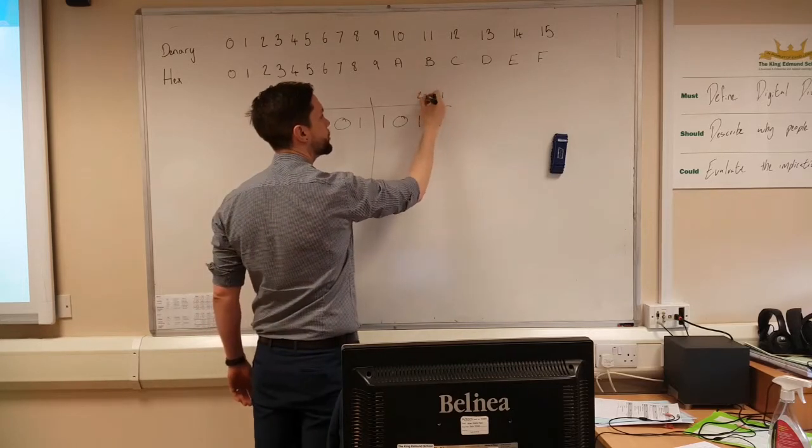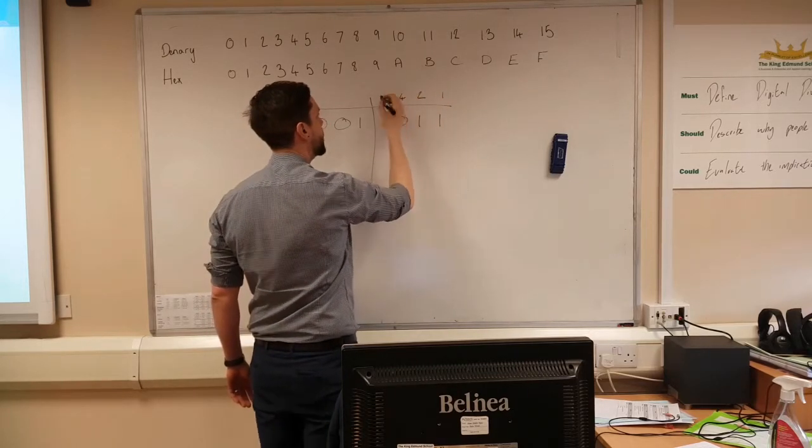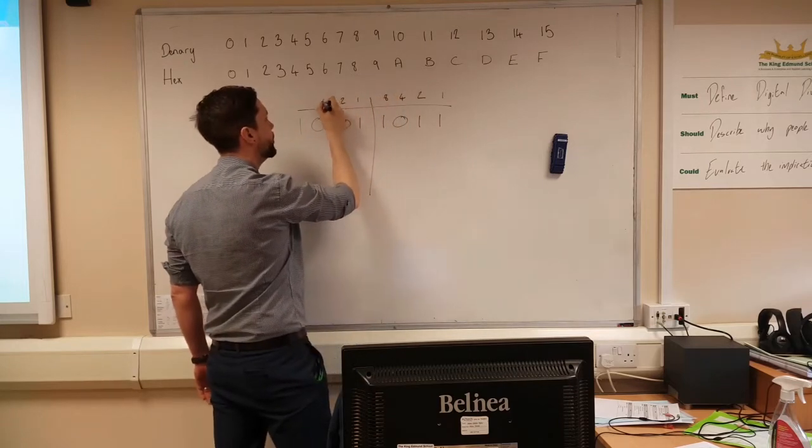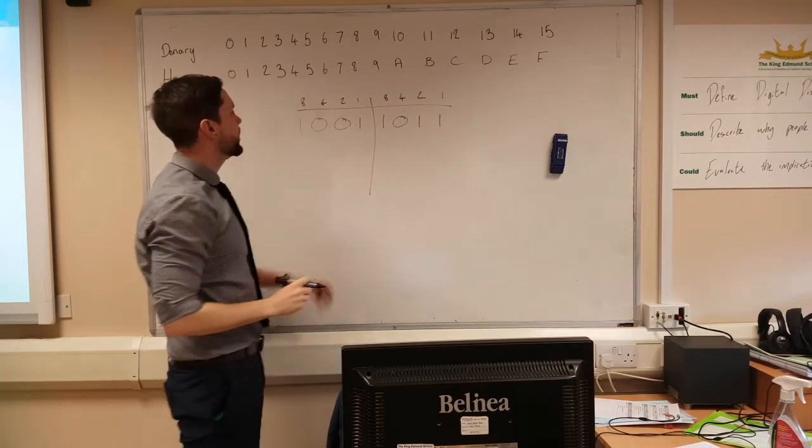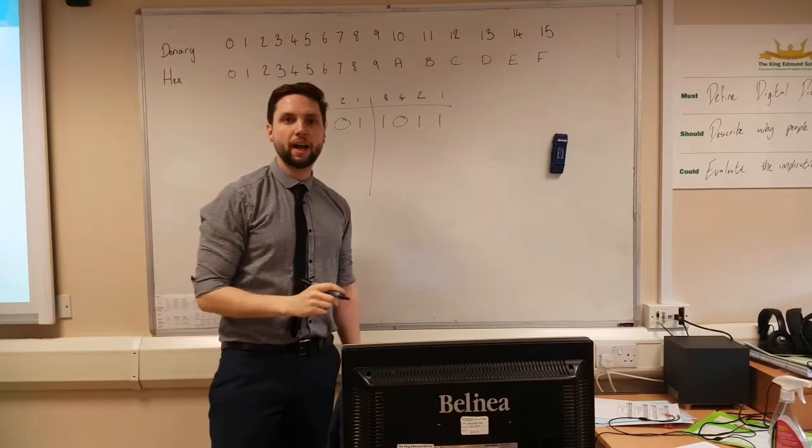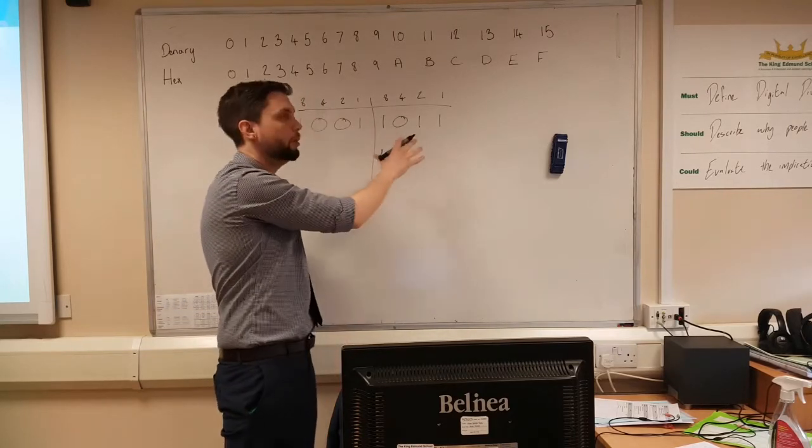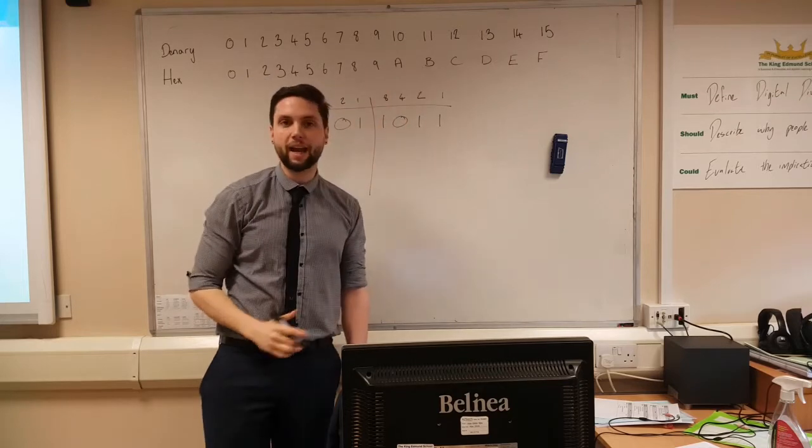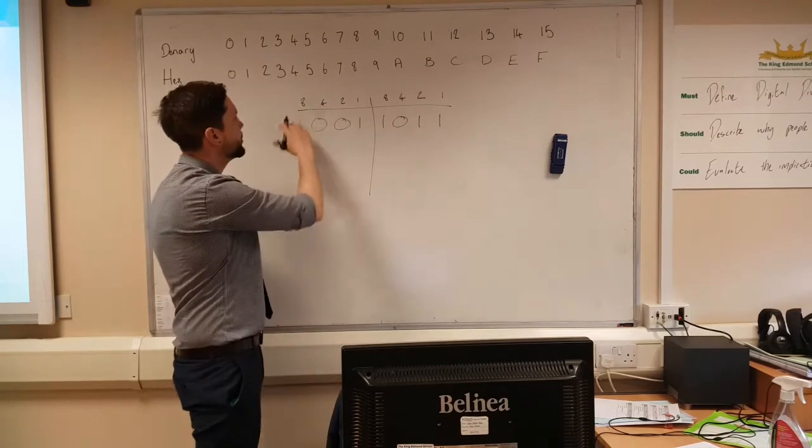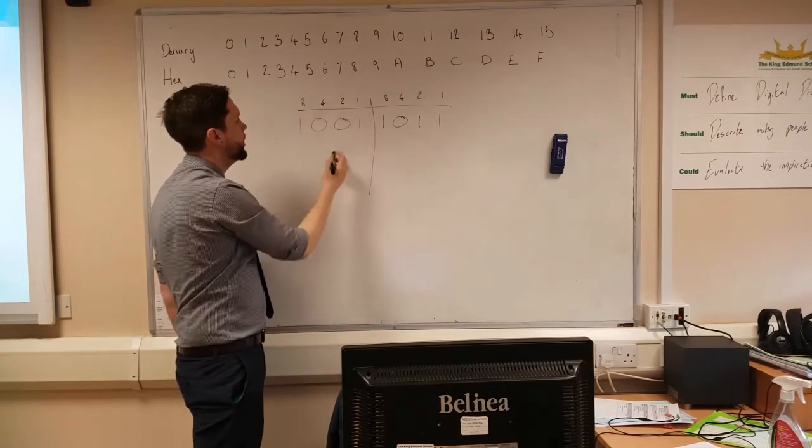So we do one, two, four, eight, one, two, four, eight. Looking at this, we can now work out the denary value of it, and then we can work up each nibble, and then we can work out the hex value from there. So if you look at this first one here, eight and one is nine.